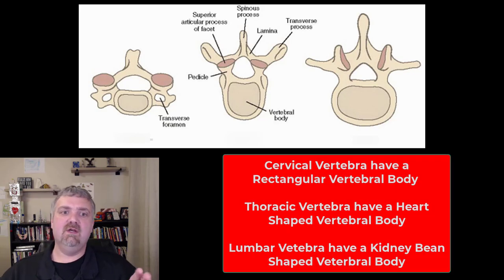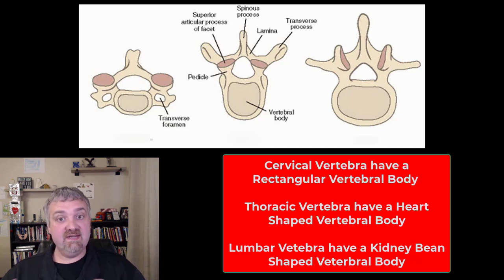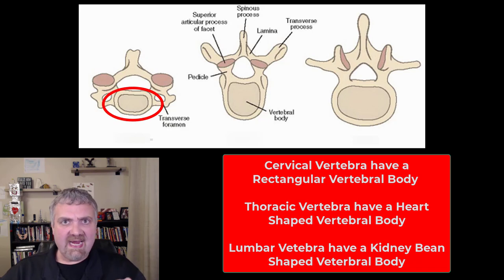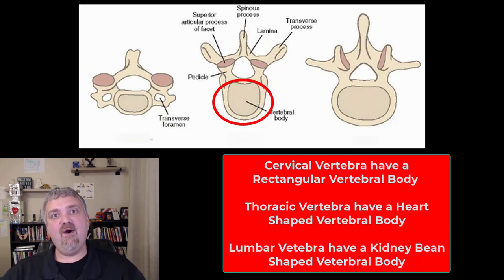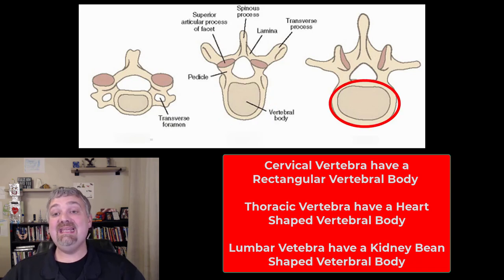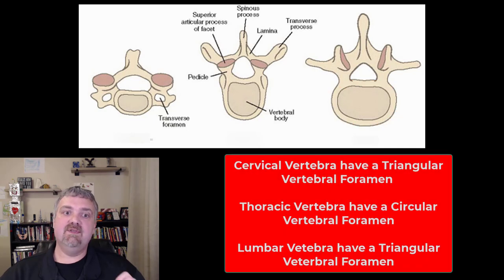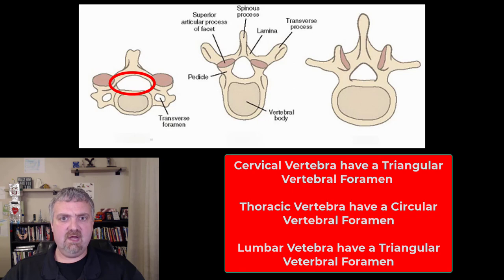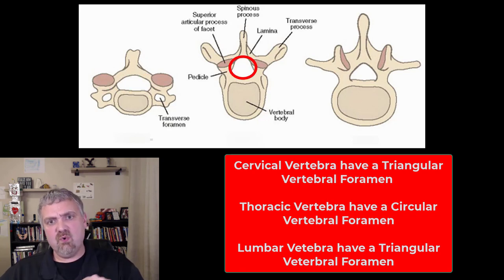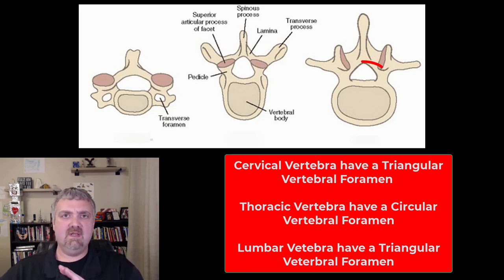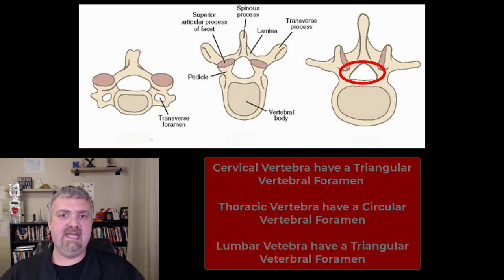So the first two things I look at are the shape of the vertebral body and the shape of the vertebral foramen, where the spinal cord would be. The cervical vertebrae has a rectangular vertebral body. With a thoracic vertebrae, I see a heart-shaped vertebral body, and then with the lumbar vertebrae, a kidney-bean-shaped vertebral body. The cervical vertebral foramen is a triangle, the thoracic is more oval or circular, and the lumbar is a triangle again.